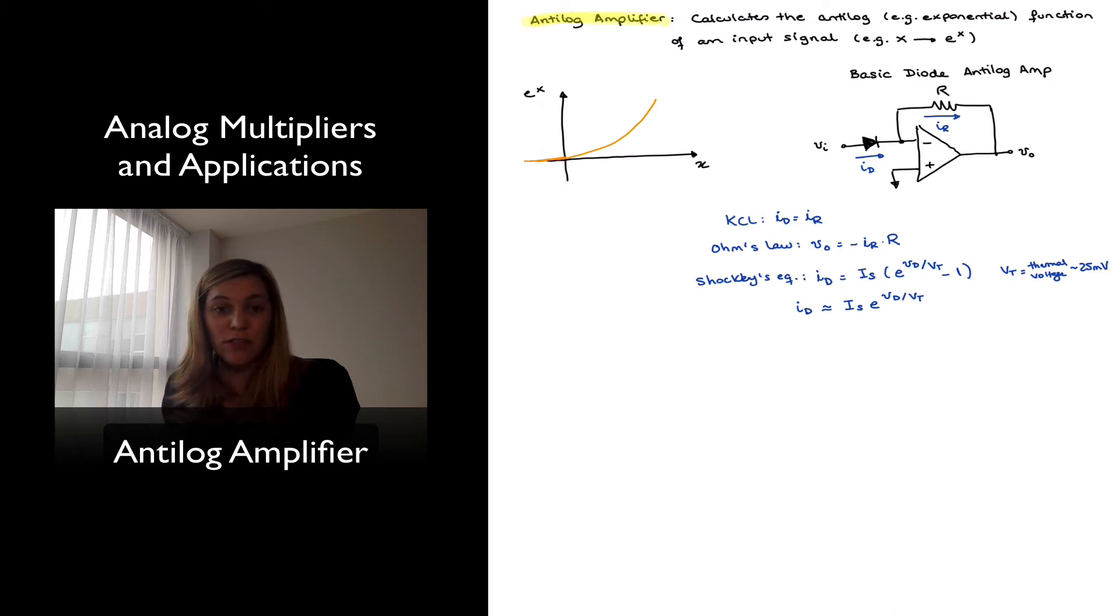From inspection of the circuit, we can see that the voltage across the diode is going to be equal to Vin, since we have a virtual ground on the negative input terminal of the op-amp, so I can rewrite this as Id equals Is times e to the Vin over Vt.